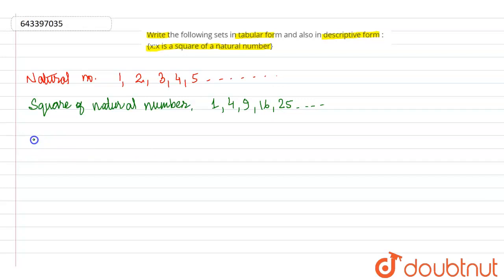So, here the required set in tabular form. Let us say A is the required set. So, A is equal to 1, 4, 9, 16, 25 and so on.